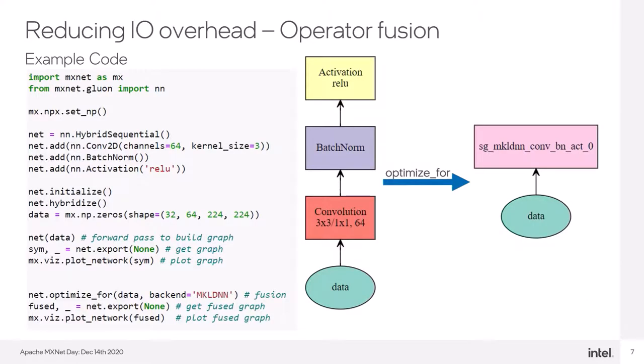Here we have sample code and MXNet's package visualization. As you can see in the example, we're enabling NumPy semantics support and building a simple model with gluon blocks using similar operators as in the slide before.